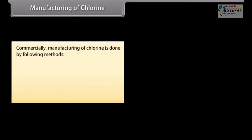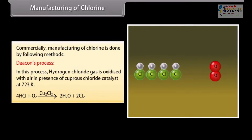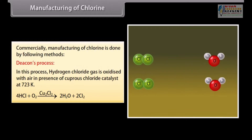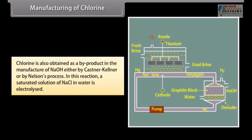Commercially, chlorine is manufactured by the following methods. In Deacon's process, HCl is oxidized with air in the presence of cuprous chloride catalyst at 723 K. It is also manufactured by electrolysis of fused NaCl using lead as cathode and carbon as anode. Chlorine is also obtained as a by-product in the manufacture of NaOH by the Castner-Kellner or Nelson's process, in which a saturated solution of NaCl in water is electrolyzed.